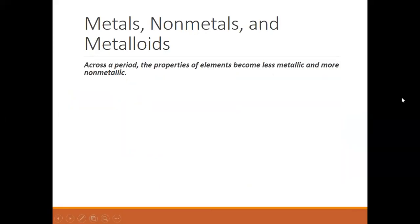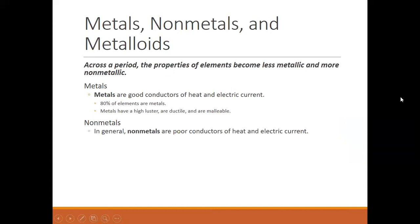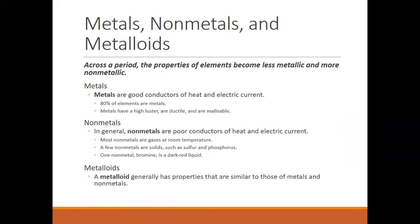And with those properties, again, just to review, metals are good conductors of heat and electric current. They have high luster. They're ductile and malleable. Non-metals, you're going to see the opposite. Basically, they're poor conductors of heat and electric current. They are mostly gases at room temperature, although there are examples of solids like sulfur and phosphorus and bromine, which is a liquid. And metalloids are going to show some of both, some properties of each. So they are going to be the hybrid model.